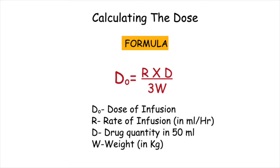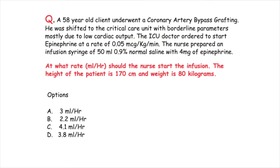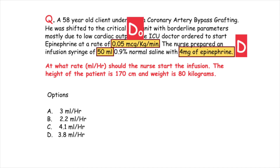One thing that needs to be kept in mind is that the weight of the patient can also be given in pounds, so we need to convert it back to kg to fit it into the formula. Now let's get back to the question and collect the relevant data. The dose required is 0.05 microgram per kg per minute. D, the drug quantity in the diluent, is 4 mg of epinephrine in 50 ml of 0.9% normal saline.